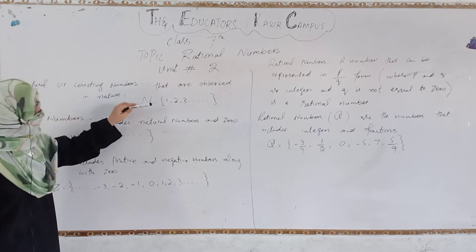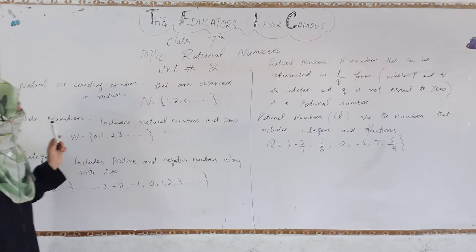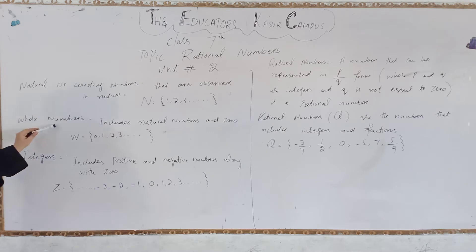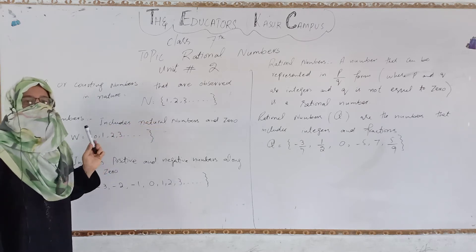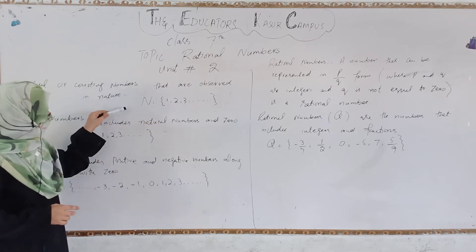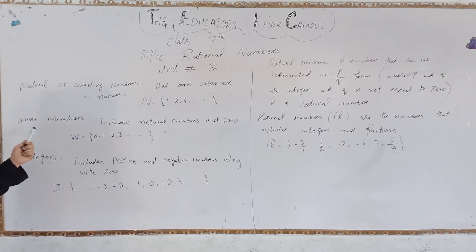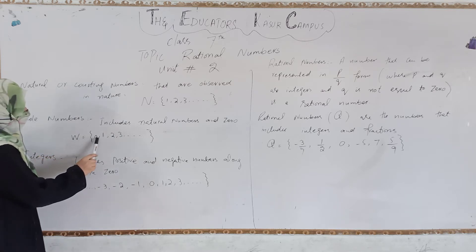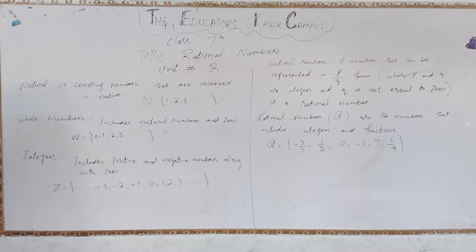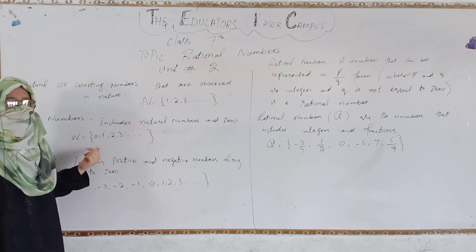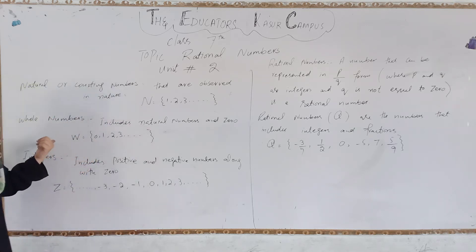Whole numbers are natural numbers along with zero. The difference is that zero is not a natural number but it is included in whole numbers. We denote whole numbers with a capital letter W.